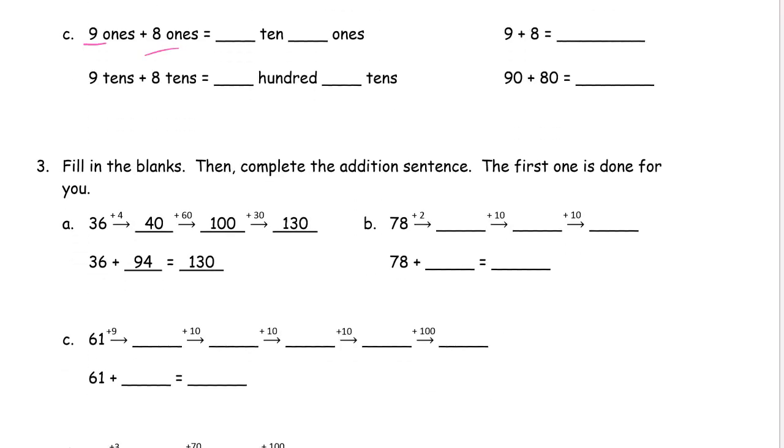Nine ones plus eight ones, that's going to be this, which is seventeen, that's a ten and seven ones, and if we do the same thing with tens, then we're going to have a hundred and seven tens for a hundred seventy.